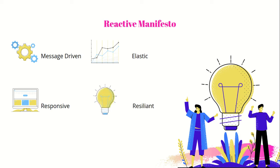Resilient. The system should be effective in handling failures. Reactive systems know how to respond in cases of errors. It is achieved by replication, isolation, containment, and delegation. This makes the system recover in cases of failures without putting the entire system to a halt.